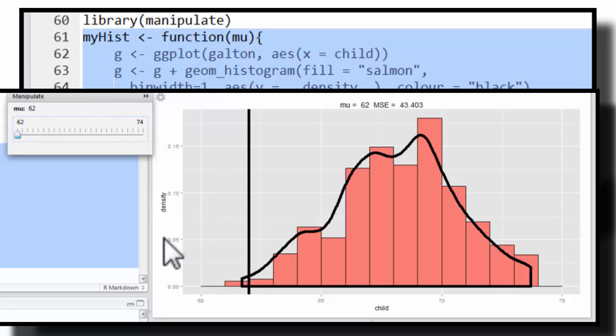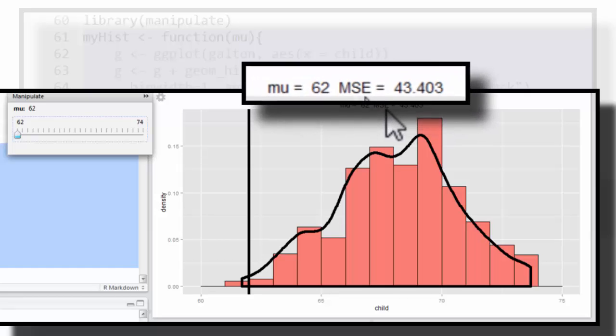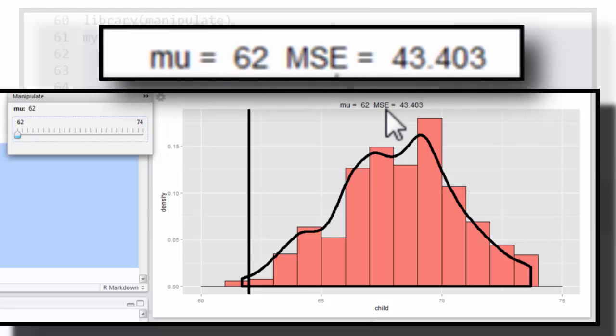Okay, so here is the plot of the child's heights. It's the histogram. And I've overlaid a continuous histogram on top of it. And here, let's say this vertical black line is our current estimate of the mean. So here it's saying that the mean is 62. And it gives us the mean squared error. That's a measure of imbalance, how teetering or tottering this histogram is.